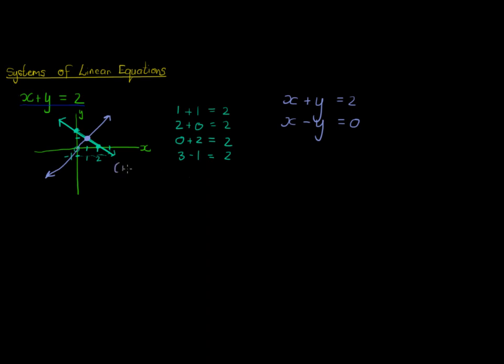We write like that, 1 comma 1, which means when x is 1 and y is 1 this will be true and that will be true at the same time, because 1 plus 1 is equal to 2 and 1 minus 1 is equal to 0. Which means this system of equations, linear equations, has one solution and that solution is 1 comma 1.